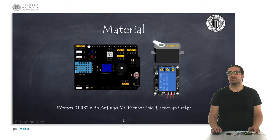So this is the material that we use for this presentation. As usual we are working with the Wemos D1 R32 together with the Arduino multi-sensor shield and we use here a servo and a relay module.